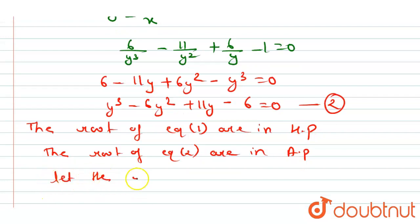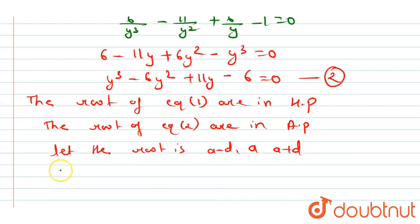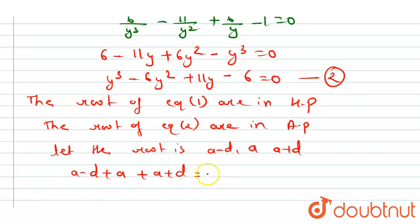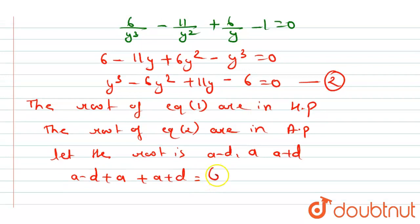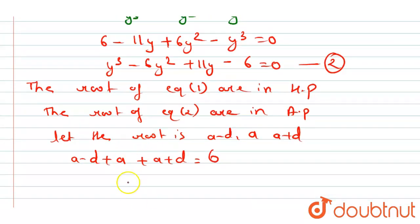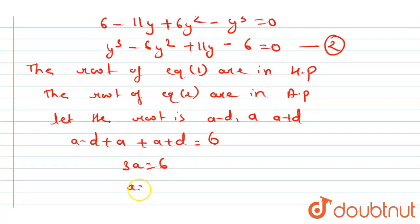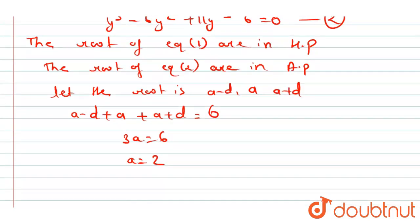Let the roots be (a - d), a, and (a + d). We know that (a - d) + a + (a + d) = -b/a = 6. Solving this, we get 3a = 6, therefore a = 2.